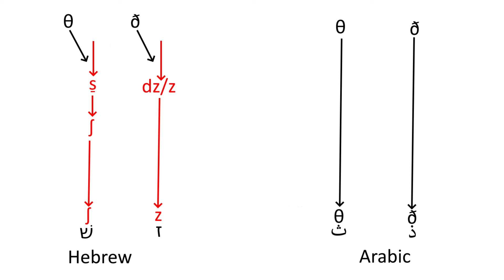but many modern Arabic varieties merge them with sounds depending on the dialect and the word. Palestinian Arabic largely merged them with T and D in most words, and S and Z in others,